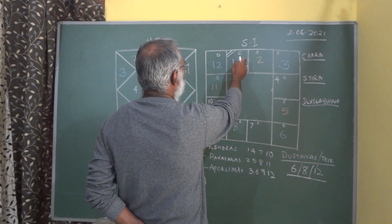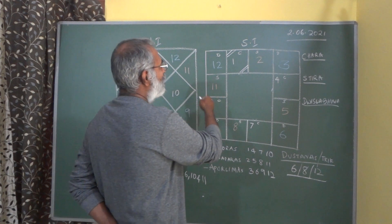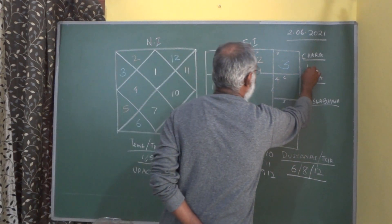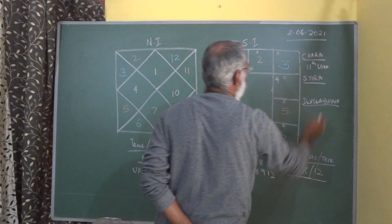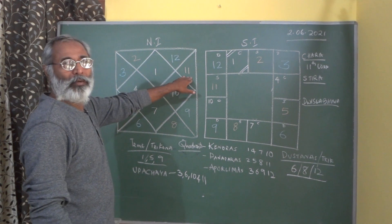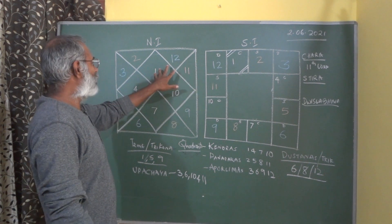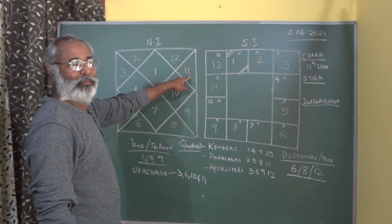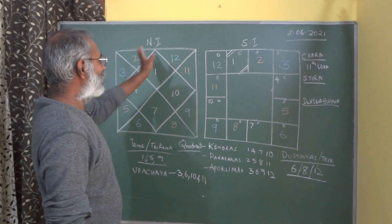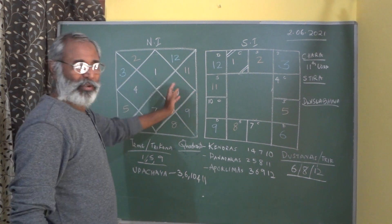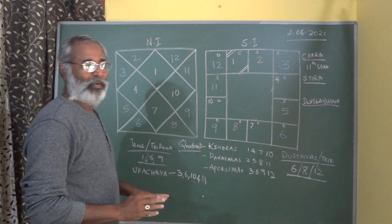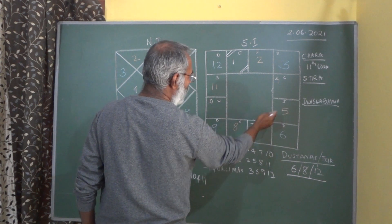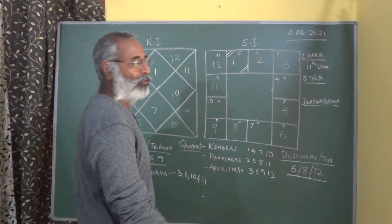For a Chara Rashi, the 11th Lord becomes a Bhadaka. For Sthira Rashis — that is Taurus, Leo, Scorpio and Aquarius — the Bhadaka is the 9th Lord. A Bhadaka is that planet which will become an obstacle, which will pose hurdles and challenges to the person in his lifetime. For Sthira Rashi, it is the 9th Lord from that Ascendant. For the Dvishvabhava Rashi — these four corners — the Lord of the opposite sign becomes the Bhadaka, that is, the 7th Lord.